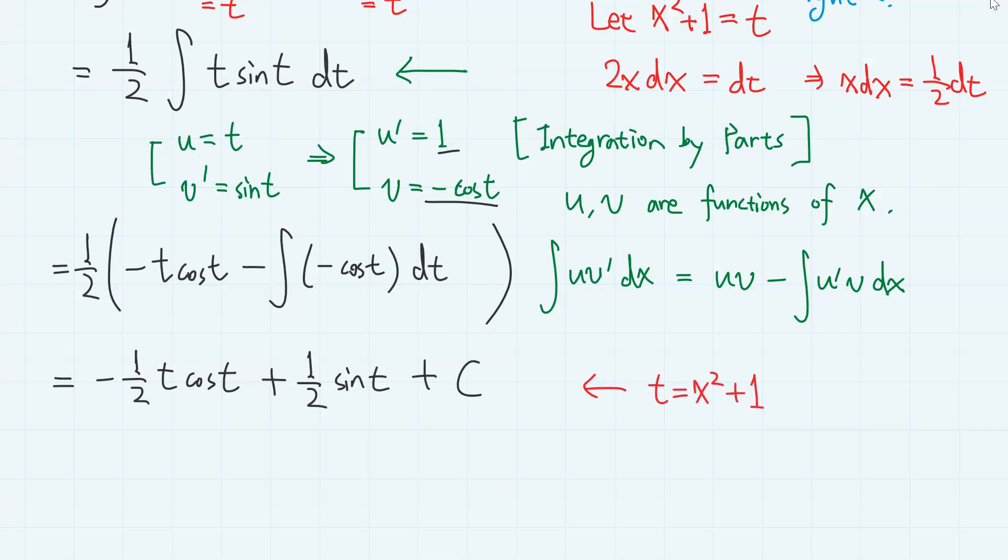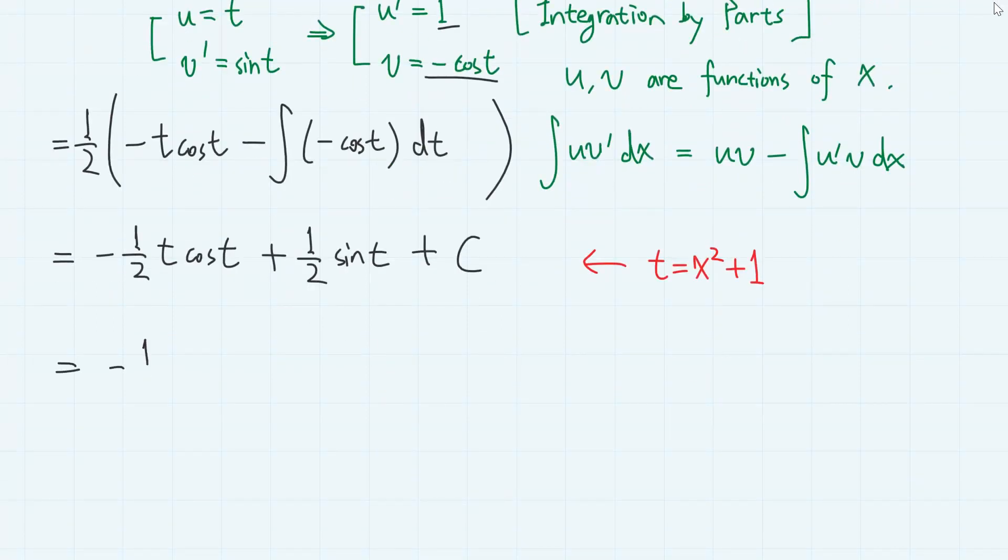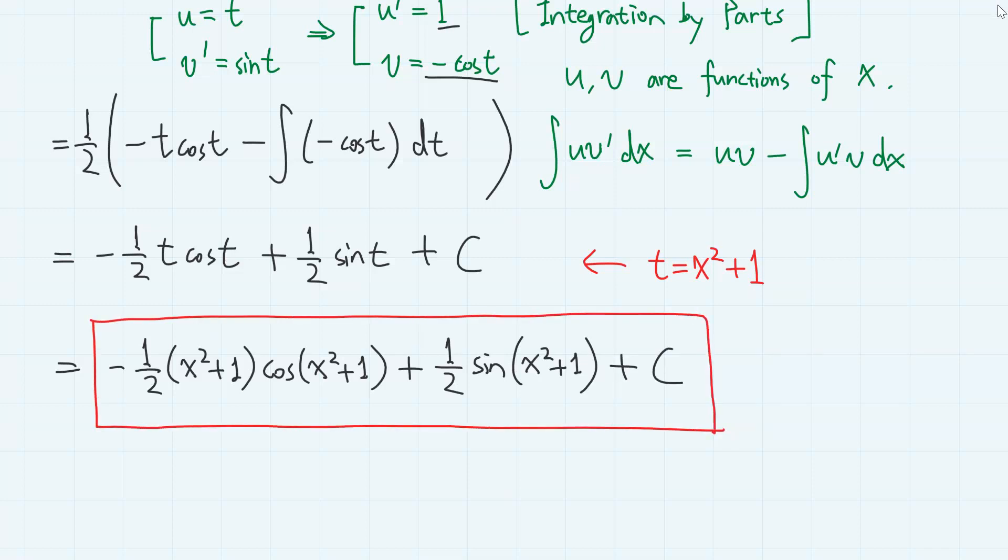So changing this t back to x squared plus 1, we have minus 1 half x squared plus 1 cosine x squared plus 1 plus 1 half sine x squared plus 1 plus c. And this is the answer.